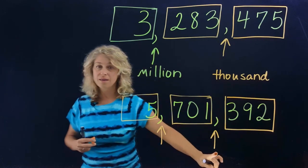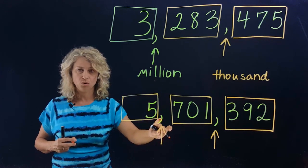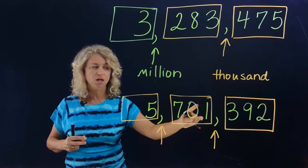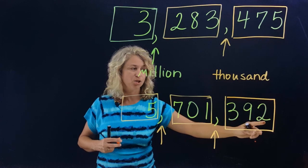Don't forget, this stands for million, this comma stands for thousand. Ready? Five million, seven hundred one thousand, three hundred ninety-two.